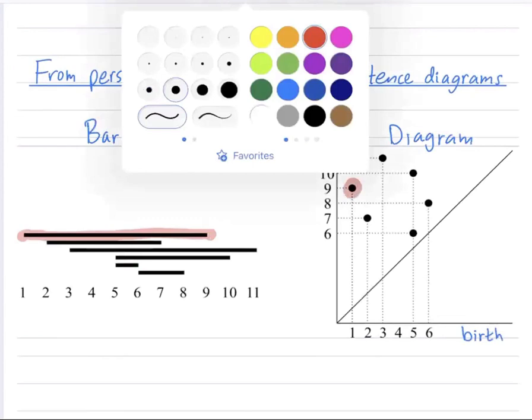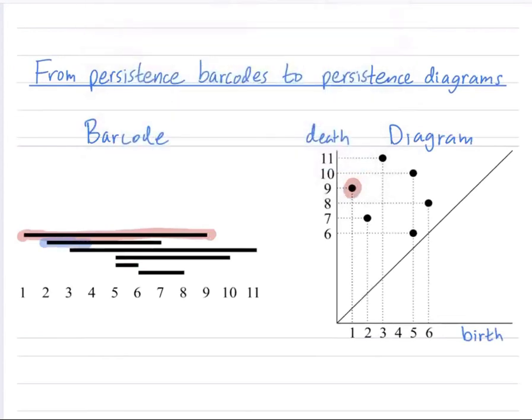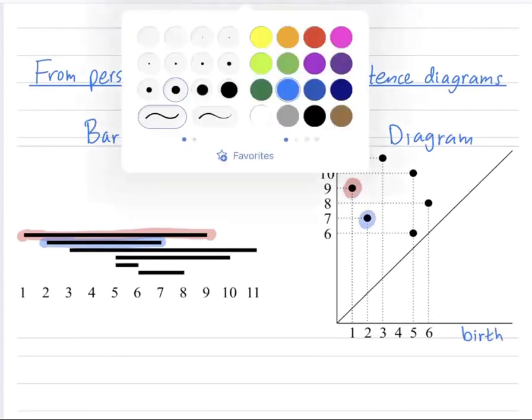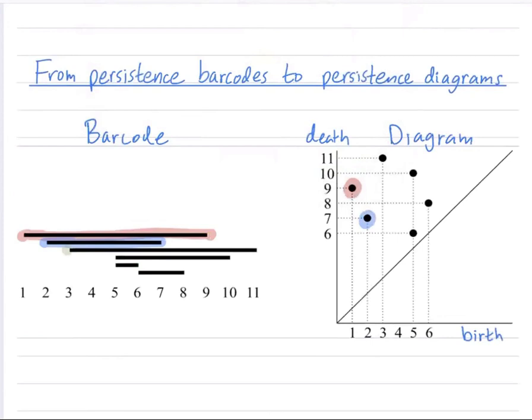And let's keep going. So next we have this bar that's born at scale two and dies at scale seven. So I put a point at two seven in the plane. And then I have a bar born at scale three that dies at scale eleven. So I plot the point three eleven.